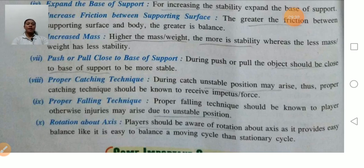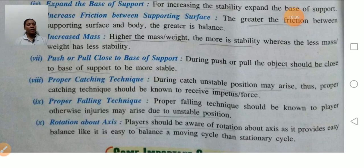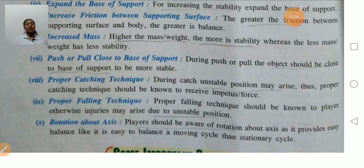Proper falling technique — the player should know proper falling technique; otherwise, injury may arise due to unstable positions. Rotation about the axis — the player should be aware of rotation about the axis, as it provides easy balance. For example, in a moving cycle, if you have knowledge about the axis of the moving cycle, there will be more stability and balance. If you know about the rotation of the axis, you will be able to balance yourself.